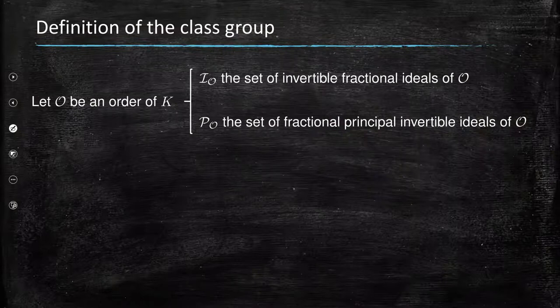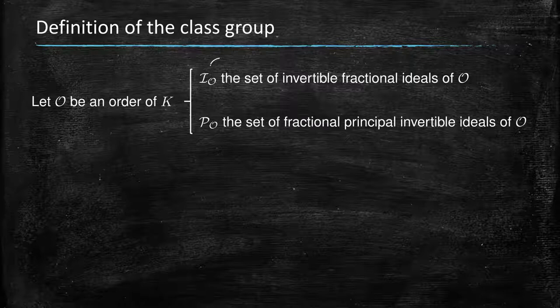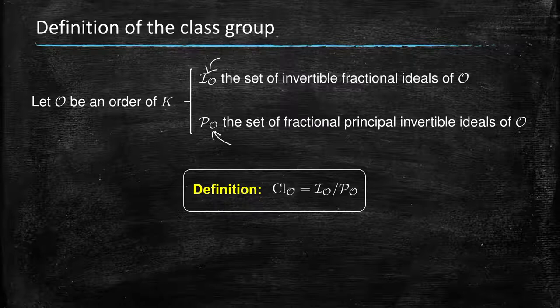The definition of the class group depends on two main ingredients: the invertible fractional ideals of an order O of K, and the principal fractional ideals that are invertible in O. By definition, the class group of the order O...